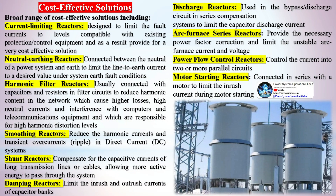A broad range of cost-effective solutions includes current-limiting reactors, designed to limit fault currents to levels compatible with existing protection and control equipment. Neutral earthing reactors are connected between the neutral of a power system and earth to limit line-to-earth current to a desired value under system earth fault conditions.